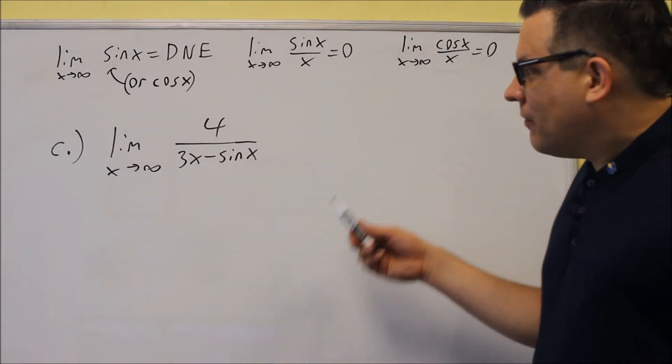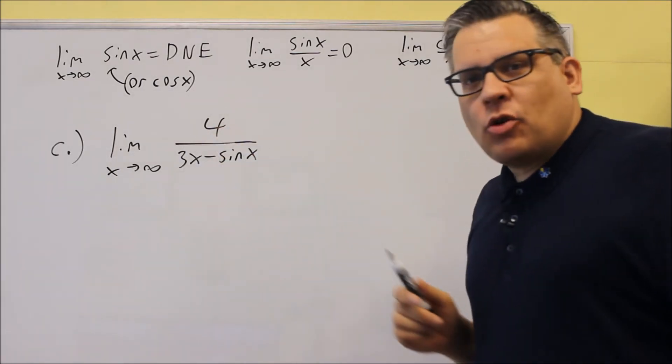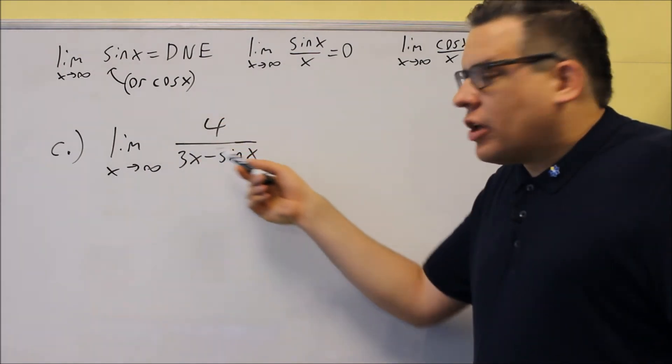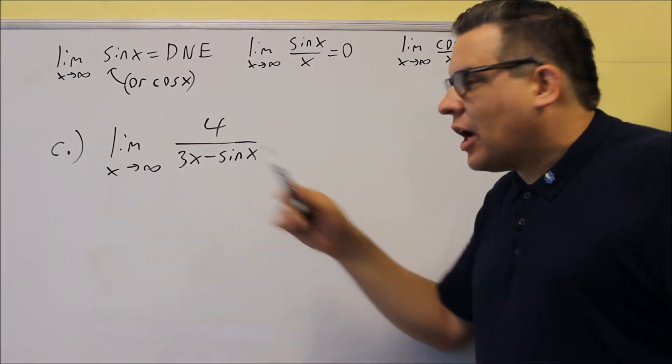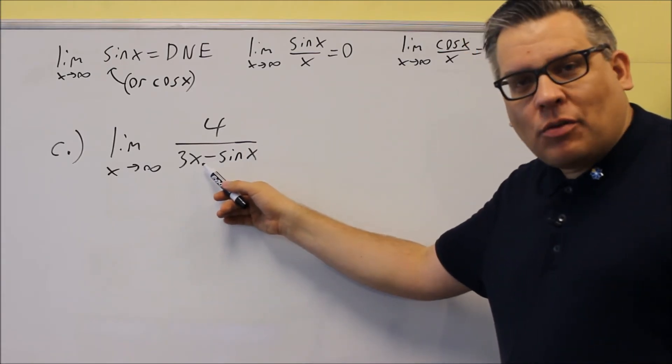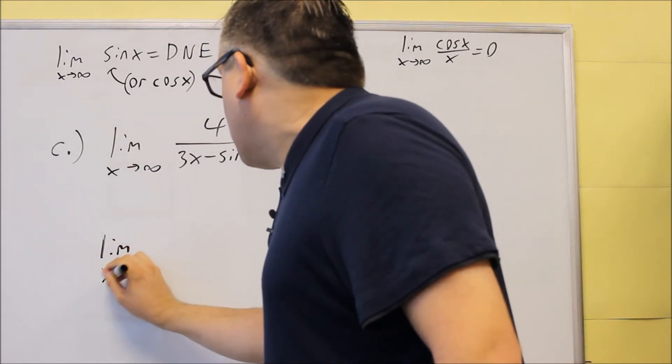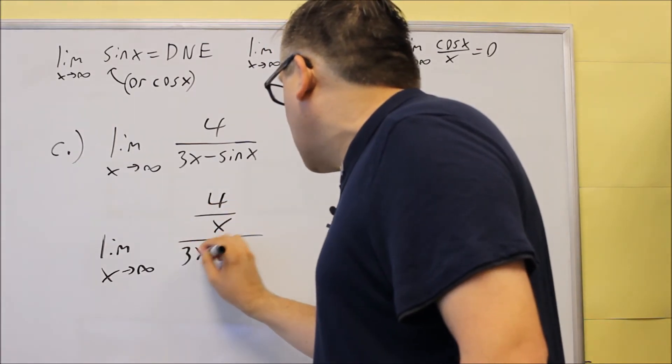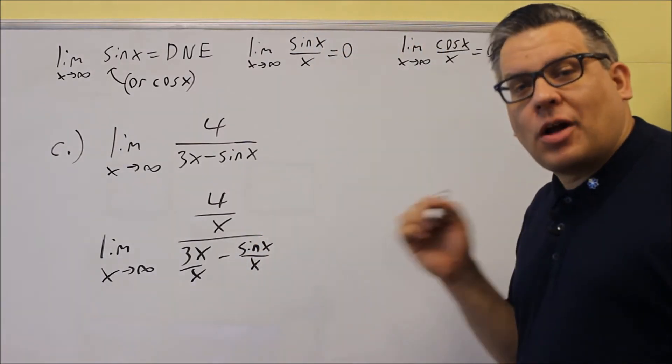Okay, so for part C, limit x approaches infinity of 4 over 3x minus sine x. So to approach this kind of problem, we're actually going to apply the same technique that we've previously talked about in this session. What that involves is taking everything on the top and bottom, and you're dividing it by the highest power you have in the bottom. That's also going to work for this one. Even though we have a sine x, the highest power we have in the bottom is going to be x. So that's the first thing we want to do is divide everything top and bottom by x. So we're going to do 4 over x, and then we have 3x over x minus sine x over x. So everything top and bottom we divide by x.